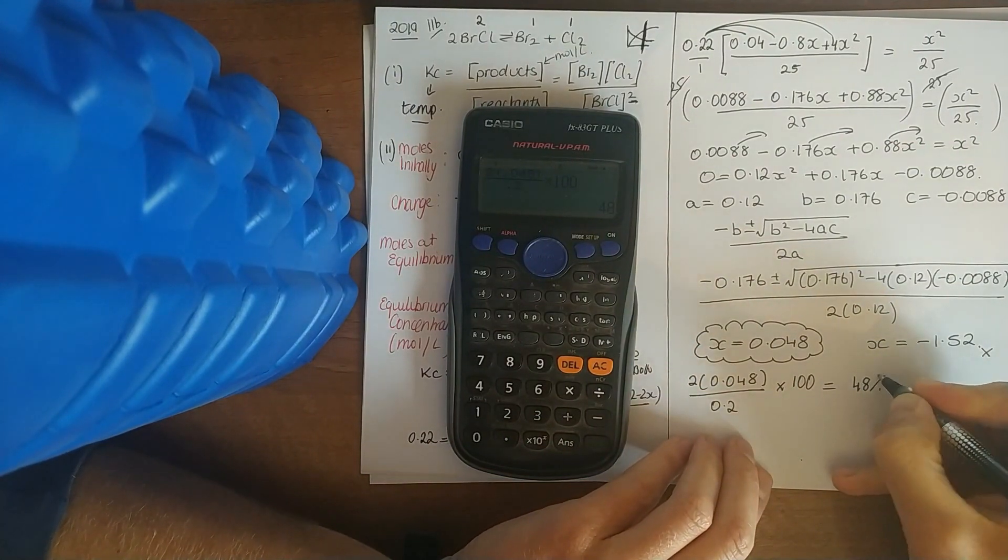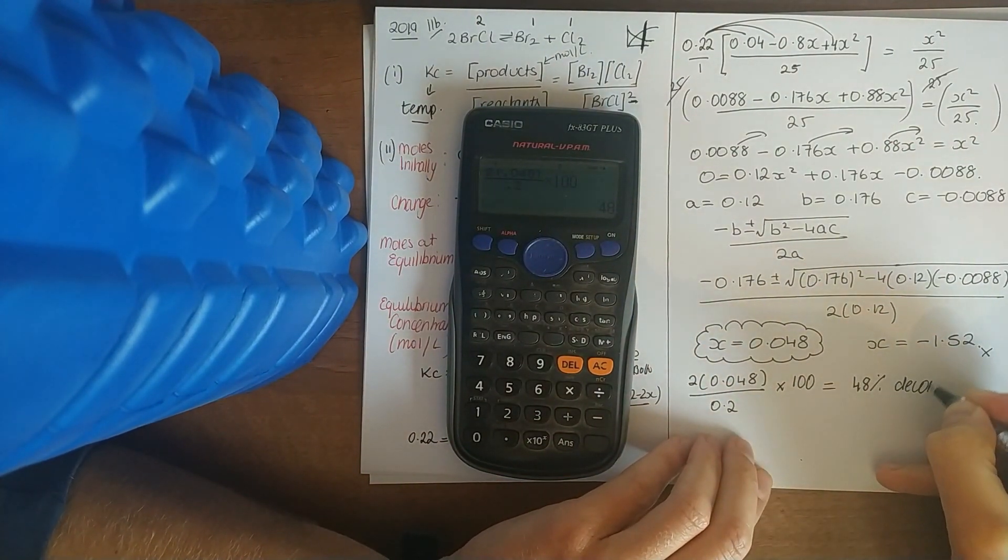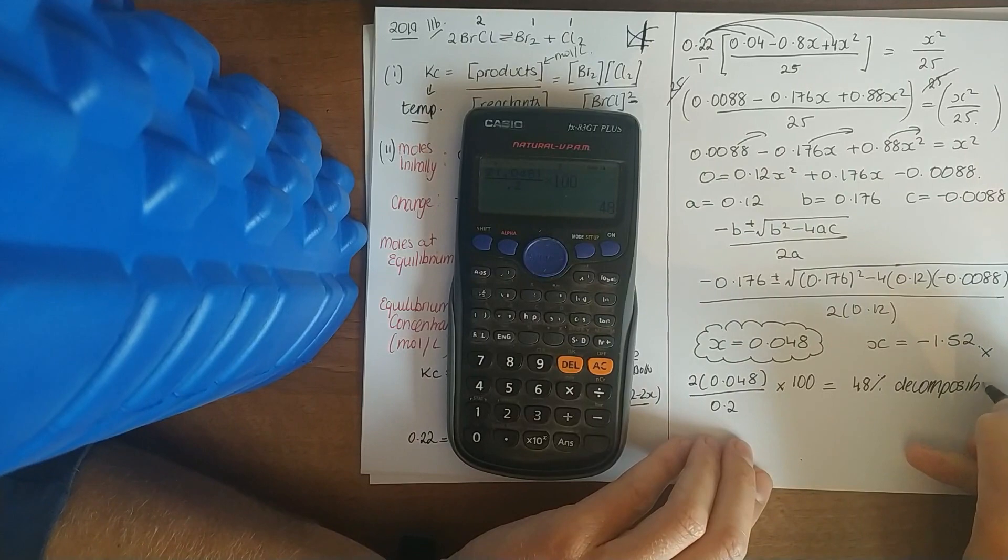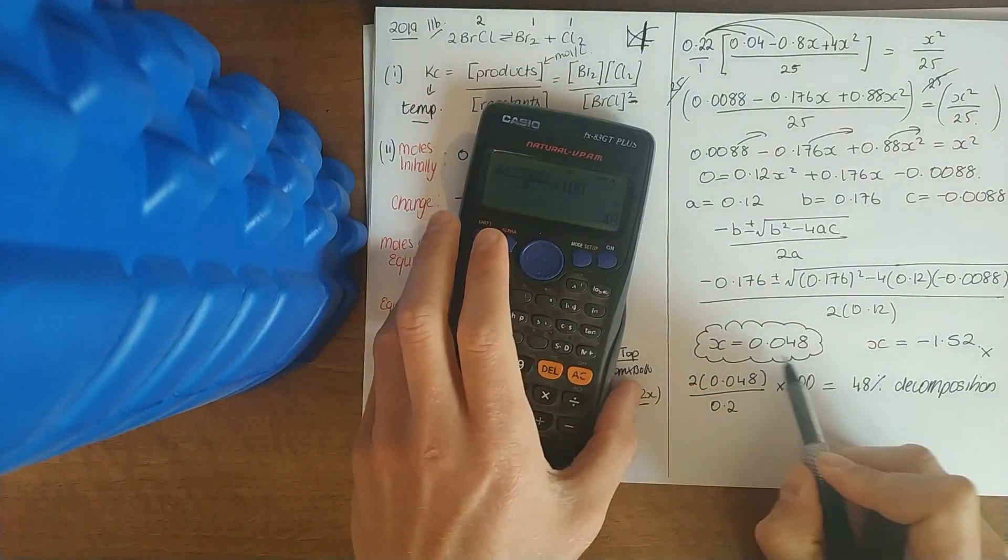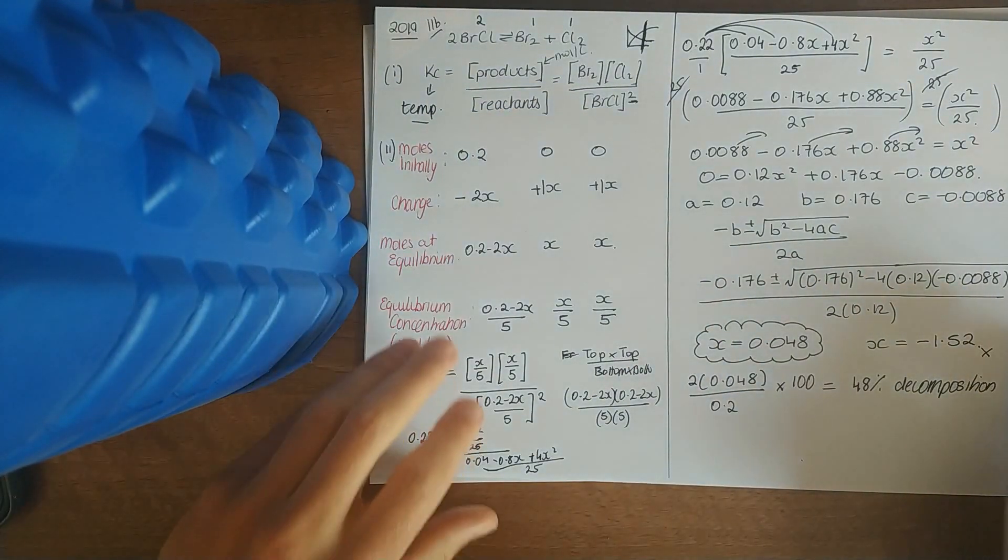So how much it decomposed by? 48%. And again they'll give you a range, depends on how many decimal points you take these answers to.